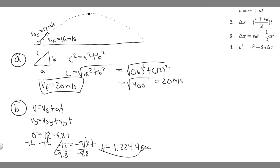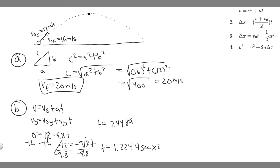Keep in mind we just solved for the time to reach the highest point. Since it takes the same amount of time to fall back down, we multiply by 2. So total time equals 2 times 1.2244, which gives approximately 2.4489 seconds — we can round to 2.45 seconds. That's how long the ball remains in the air, and that's your answer to Part B.